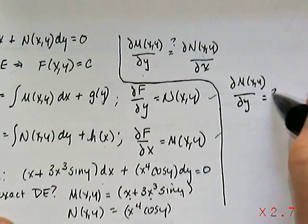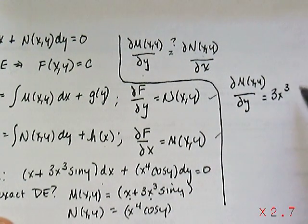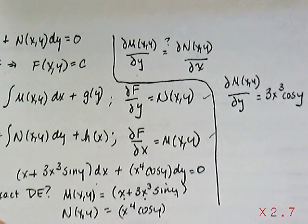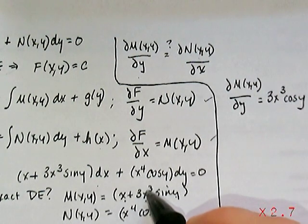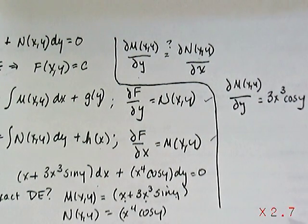So the partial of M(x,y) with respect to y, in this case, would be 0 plus 3x³ times the cosine of y, because that is the derivative of sine y with respect to y. Because the 3x³ term is held like a constant, some constant times sine of y.